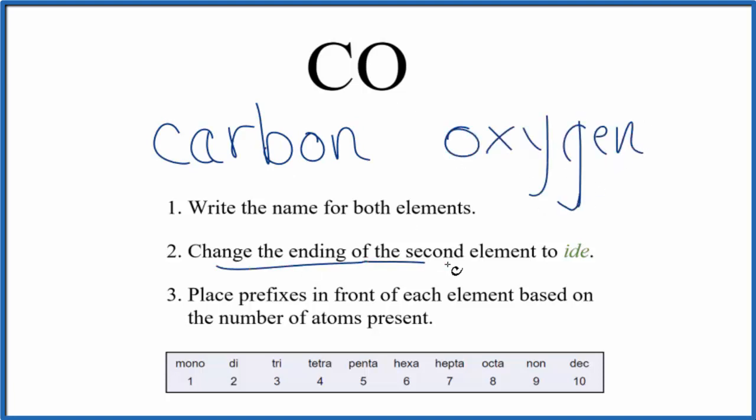Second, we change the ending of the second element, oxygen, to 'ide'. We get rid of the 'ygen' and write 'ide', giving us carbon oxide.